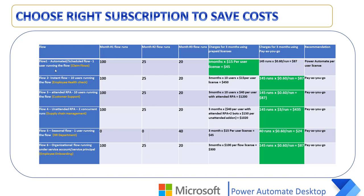In scenario one — cloud flows with one user — month one has 100 runs, month two has 25 runs, and month three has 20 runs. Using a per user plan over three months costs $45. Using pay as you go: 145 total runs × 60 cents = $87 for three months. In this case, the per user plan at $45 is cheaper than pay as you go at $87, so we recommend the Power Automate user license for this scenario.